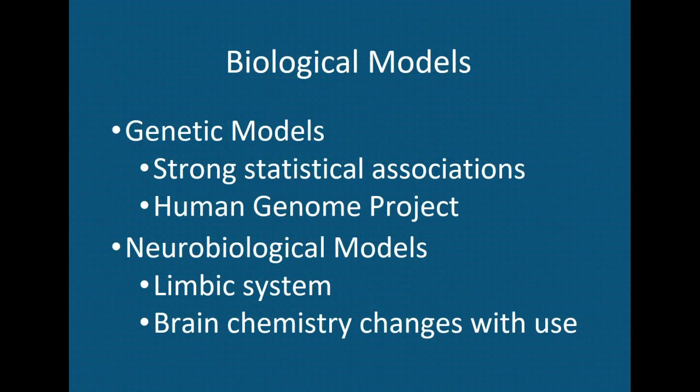Biological models primarily say that you are biologically predisposed to have an addictive use disorder. We know, based on research, that if you have an addictive use disorder, you more often than not have someone in your family who also has an addictive use disorder. And we can see some biological changes within your brain that reflect this genetic component.